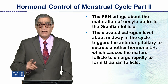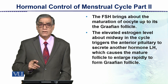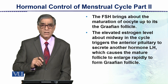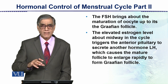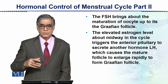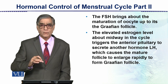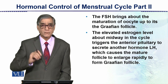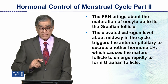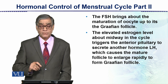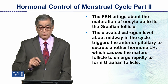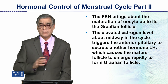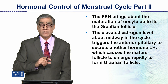Now the follicle stimulating hormone, just like the name, is released by the anterior pituitary. It comes into the blood, and through blood it enters the ovary, influencing the developing follicles. So FSH brings about the maturation of oocytes up to the Graafian follicle. This is why this phase is called the maturing follicle phase.